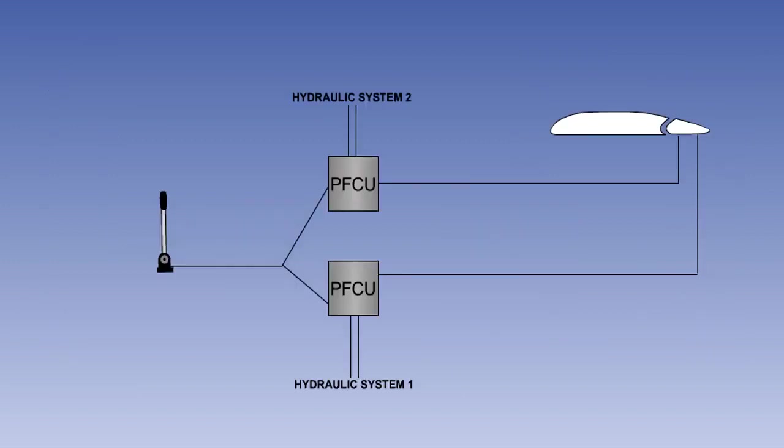When the flying controls are power operated, some form of control unit duplication is necessary to guard against hydraulic system failure. This is often accomplished by having two powered flying control units operating each flying control surface. These units will be operated by separate hydraulic systems.